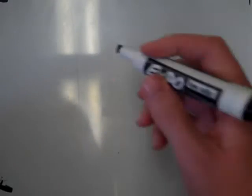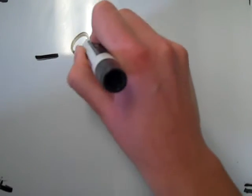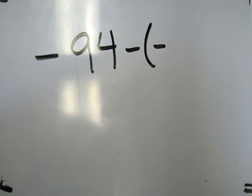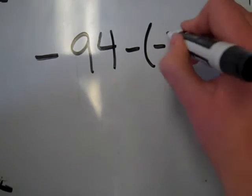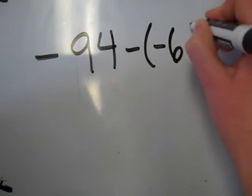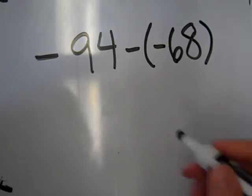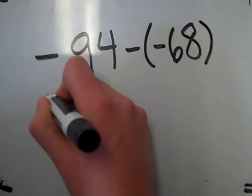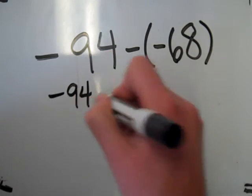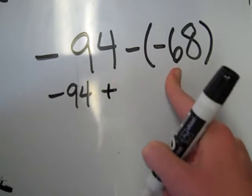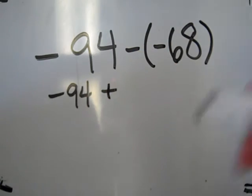Our second example problem is negative 94 minus negative 68. So again we're going to rewrite it as addition. The first number stays the same. Change the subtraction to addition and this number changes to its opposite.